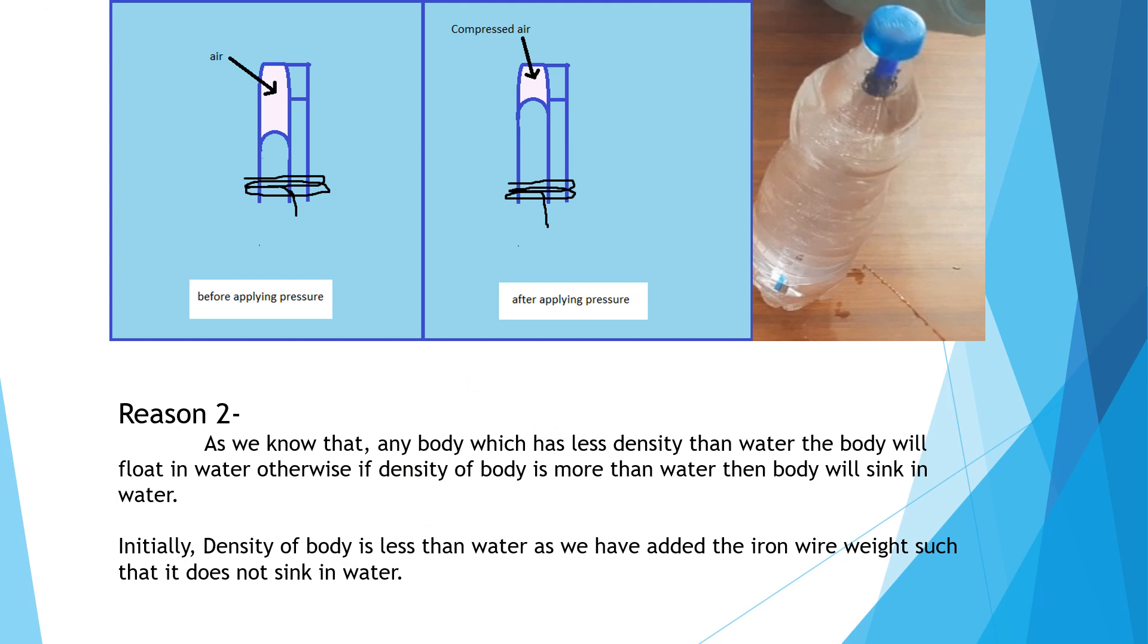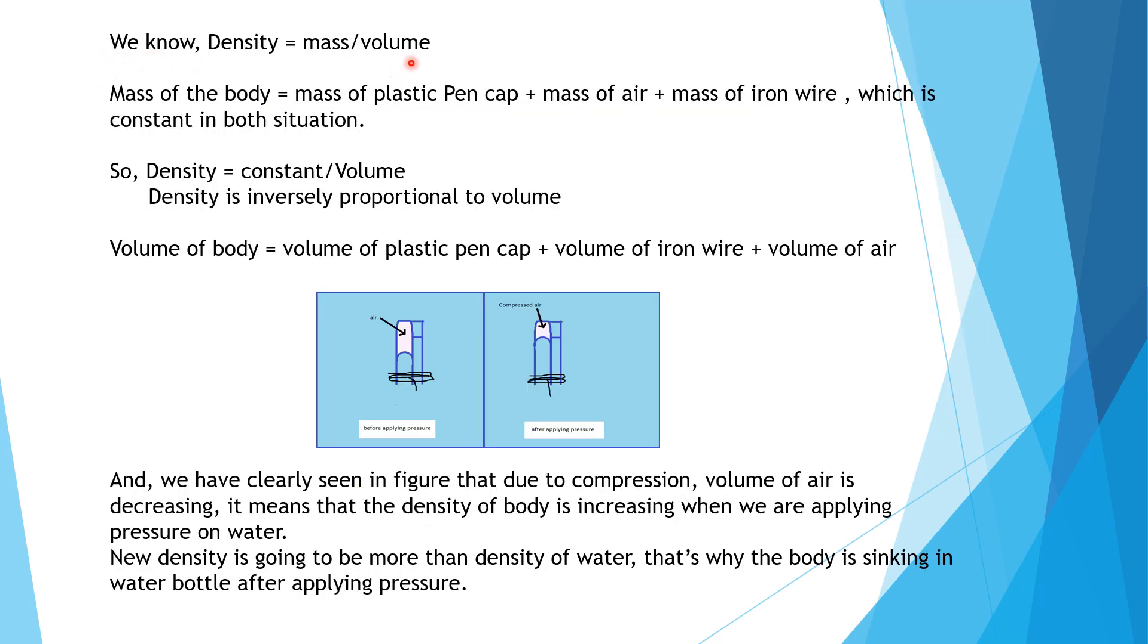As we know, density equals mass upon volume. And mass of the body is equal to mass of plastic pen cap plus mass of air plus mass of iron wire, which is constant in both situations because mass is not changing. So now density equals constant upon volume, so we can say that density is inversely proportional to volume.